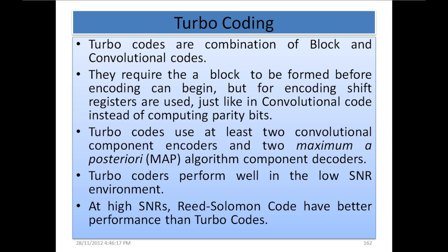Turbo codes are a combination of block and convolutional codes. They require a block to be formed before encoding can begin. For encoding, shift registers are used just like in conventional codes. Turbo codes use at least two convolutional component encoders and two maximum a posteriori algorithm component decoders. Turbo codes perform well in the low SNR environment; at high SNRs, Reed-Solomon codes have better performance than turbo codes.